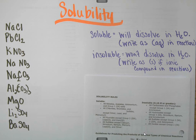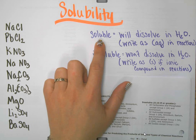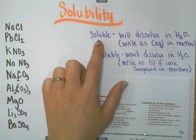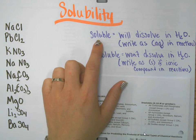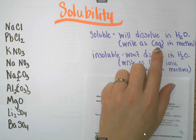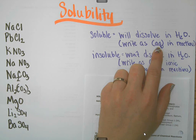This video explains solubility. If something is soluble, what that means is that it will dissolve in water, and if it's soluble, you will write it in a chemical reaction as aqueous. You will put aq in parentheses after that chemical formula.